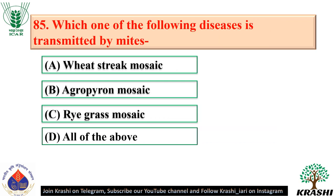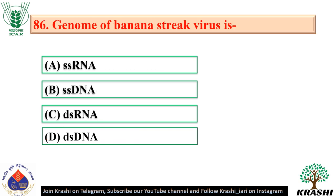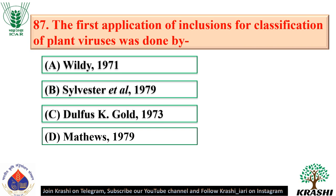Question number 85: Diseases transmitted by mites include wheat streak mosaic, agropyon mosaic, and dry grass mosaic — all of these, option D. Question number 86: Genome of banana streak virus is double-stranded DNA — option D. Question number 87: The first application of inclusions for classification of plant viruses was done by Wilde in 1971.